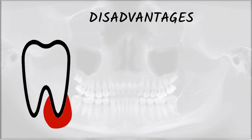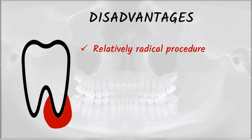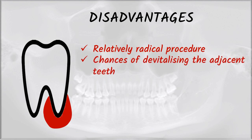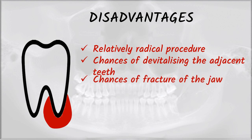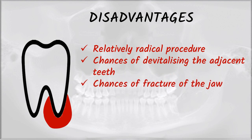Disadvantages of enucleation: First, it is a relatively radical procedure. Second, there are chances of devitalizing the adjacent teeth. Third, there are chances of fracture of the jaw — this risk is very high because after removal of the entire cyst, the bone becomes thin and the chances of fracture increase.